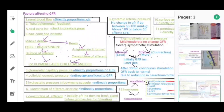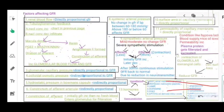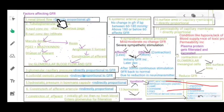Now, factors affecting GFR — this is very important, please pay higher concentration here. There are a total of 13 factors affecting GFR. First: renal blood flow, which is directly proportional to GFR. Then tubulo-glomerular feedback, which we studied in the first slide — it affects renal blood flow in two ways.